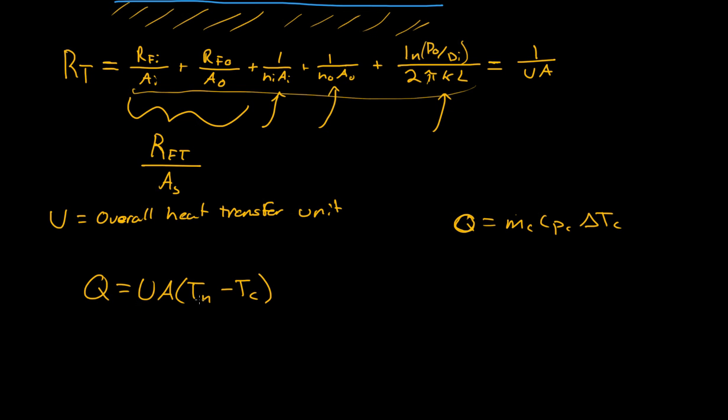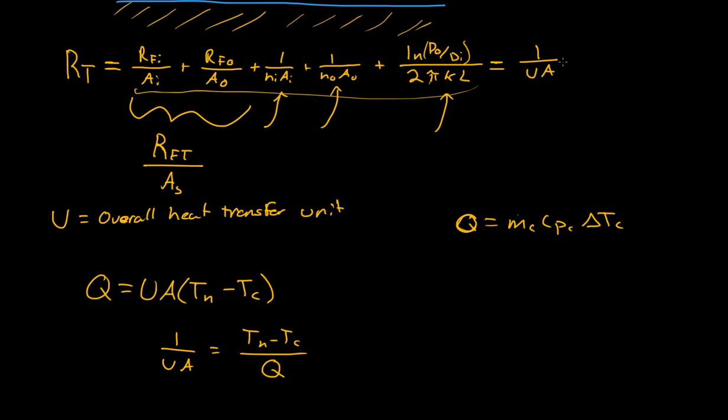If we have Q and we know what TH and TC are, we can get 1 over UA equals TH minus TC all over Q. So then we have what 1 over UA is. If we know what this is now, then we'll do a little bit of rearrangement and we can find what the fouling factors are. You can't find what these separate are, you can only find what their total is.